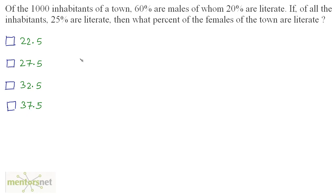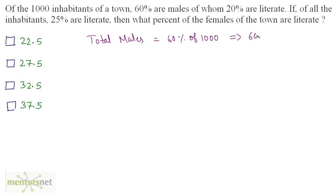Of the 1000 inhabitants of the town, 60% are males of whom 20% are literate. If of all the inhabitants 25% are literate, then what percent of the females of the town are literate? We have been given that 60% of this town are males. Total number of males is equal to 60% of 1000, which equals 600. Naturally if there are 600 males, the other 400 will be females.